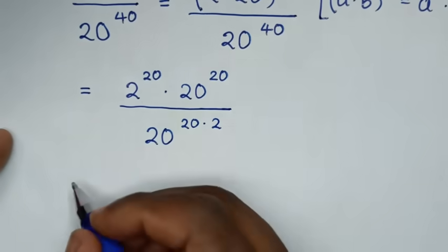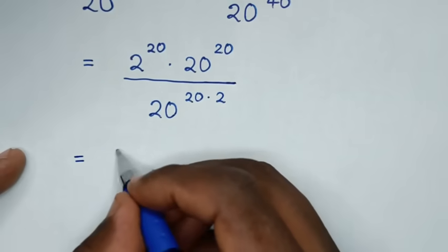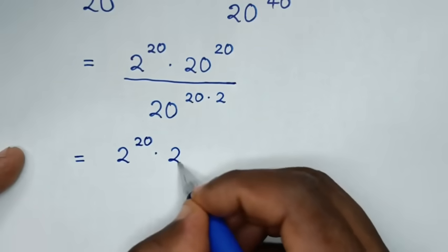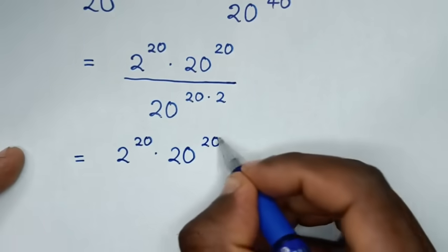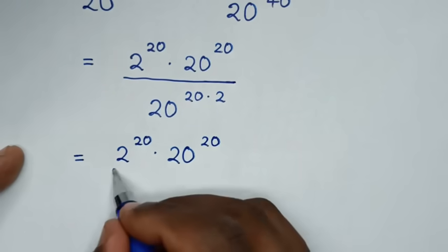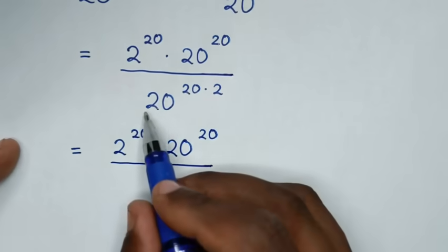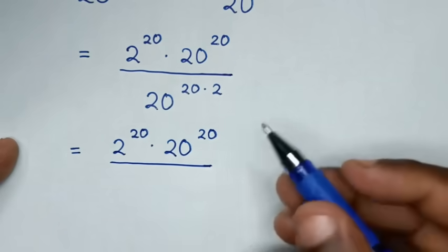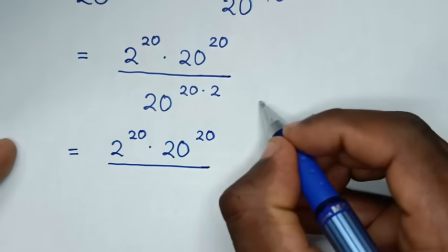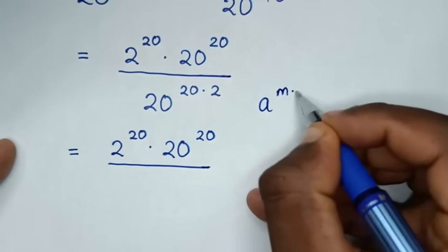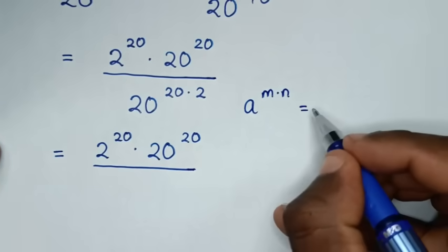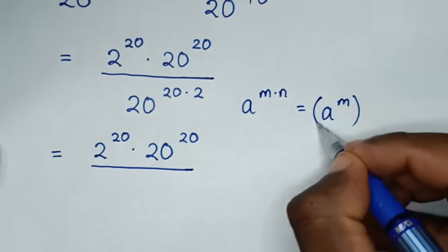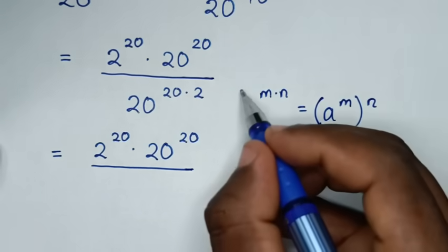Then, in the next step, it will be equal to 2 power of 20 times 20 power of 20, then over 20 power of 20 times 2. This part here is in the form of a power of m times n, which is equal to a power of m inside the bracket, power of n outside the bracket.